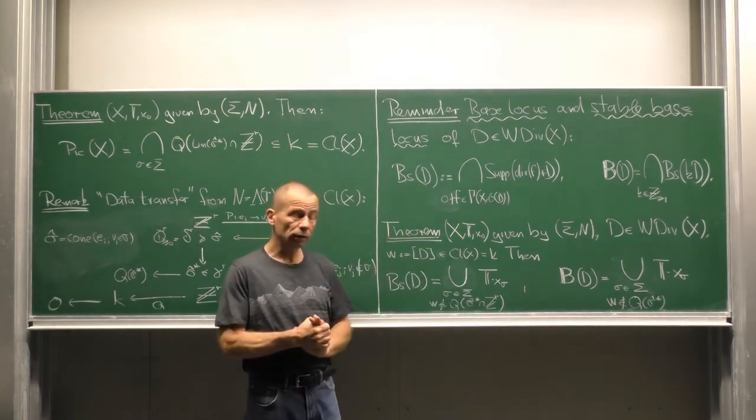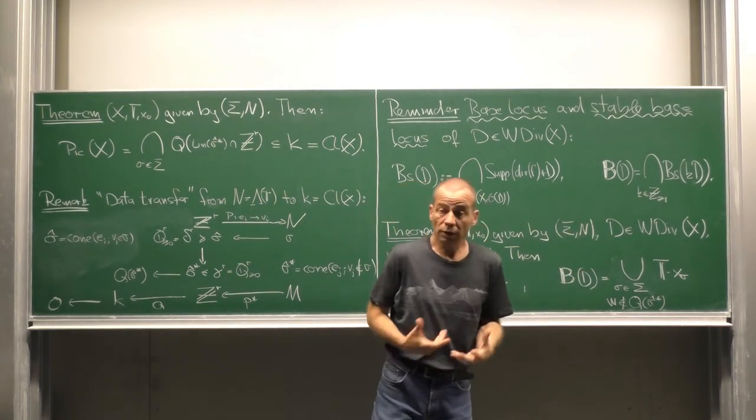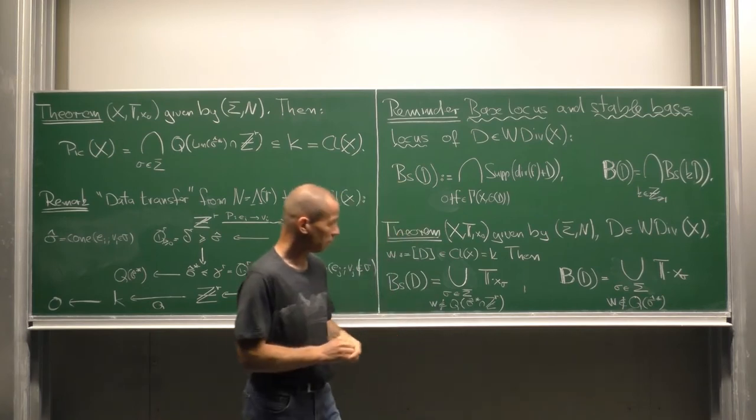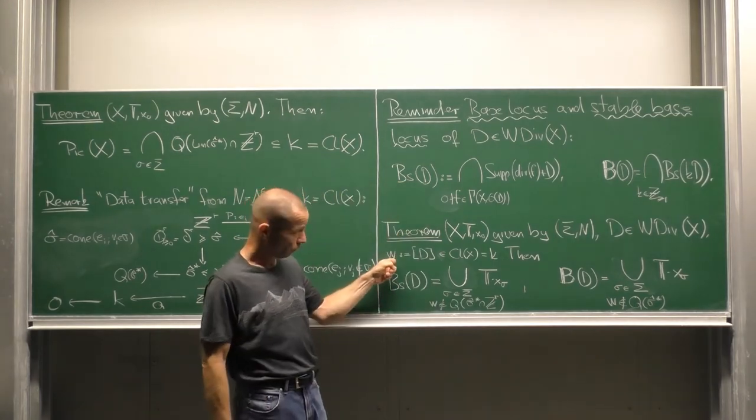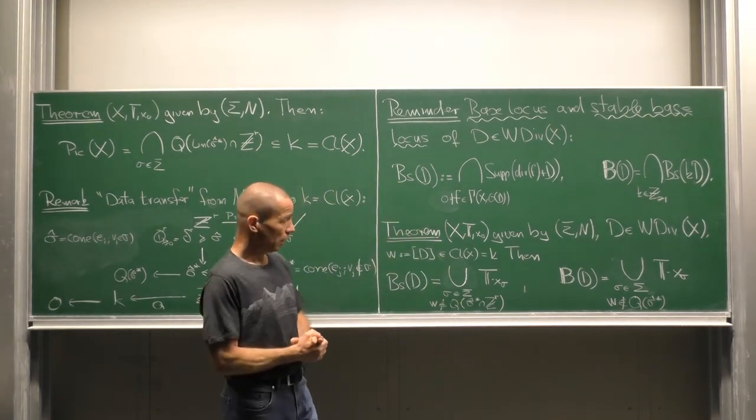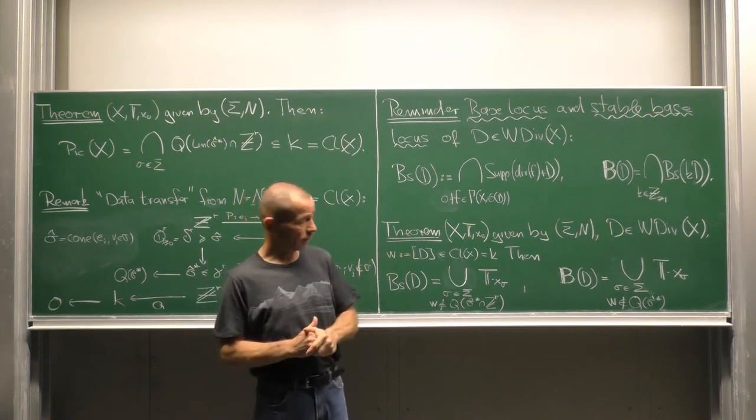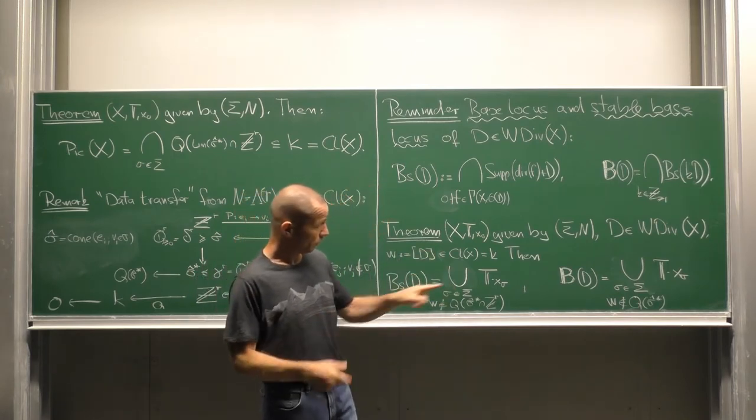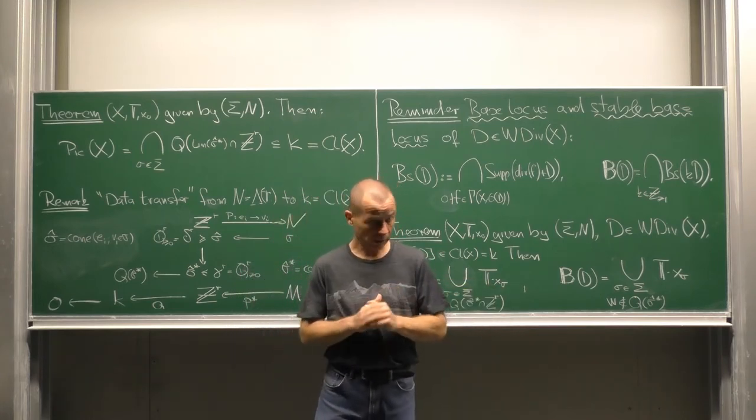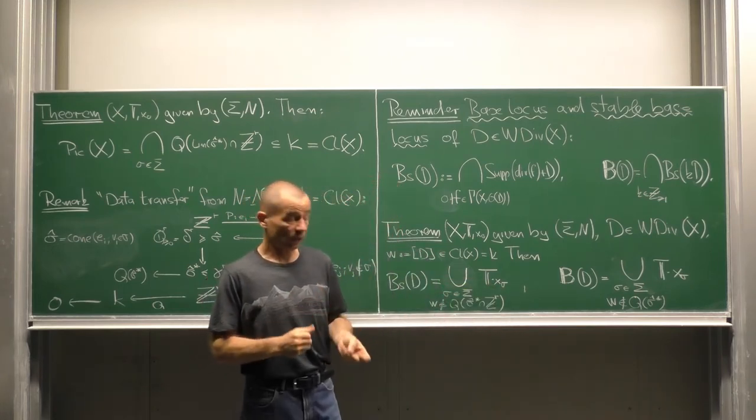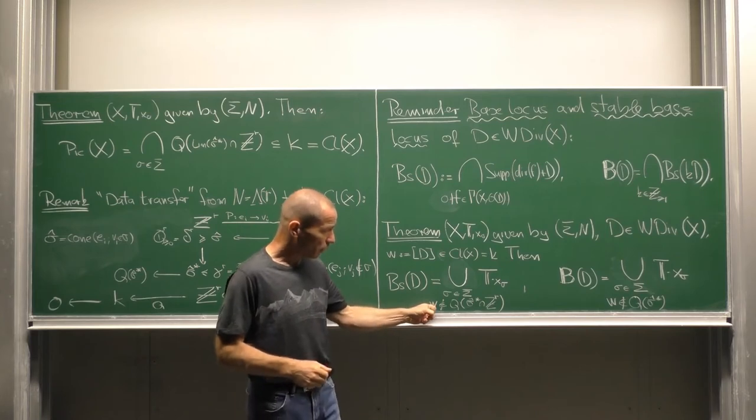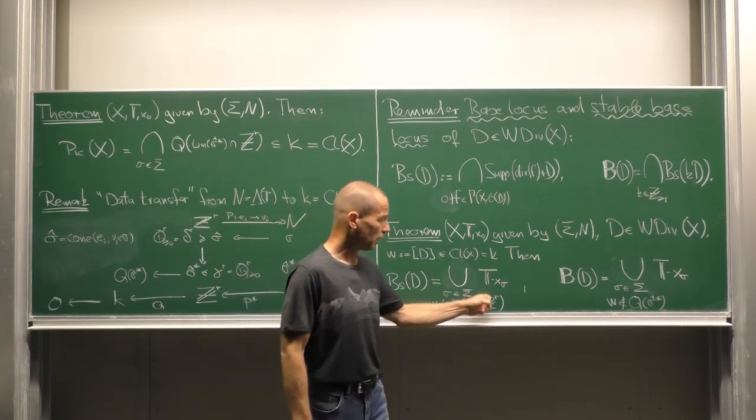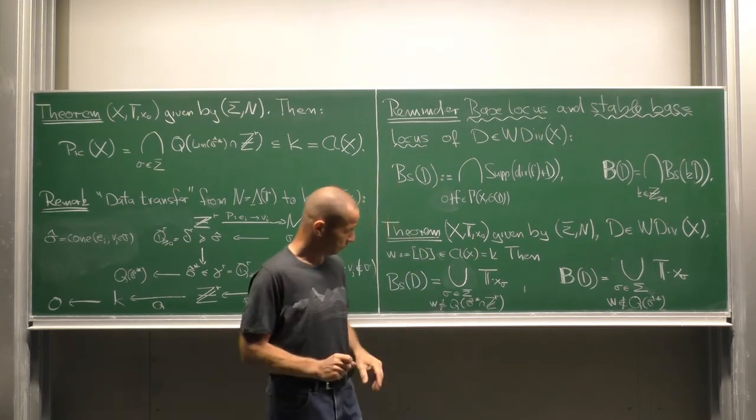How can we compute this in the case of a toric variety? Consider a not necessarily invariant divisor D denoted by w its class. Then the base locus of our divisor is the union of all torus orbits through limit points x sigma such that the divisor class w is not contained in the image of sigma hat star intersected Z^r on the cube.